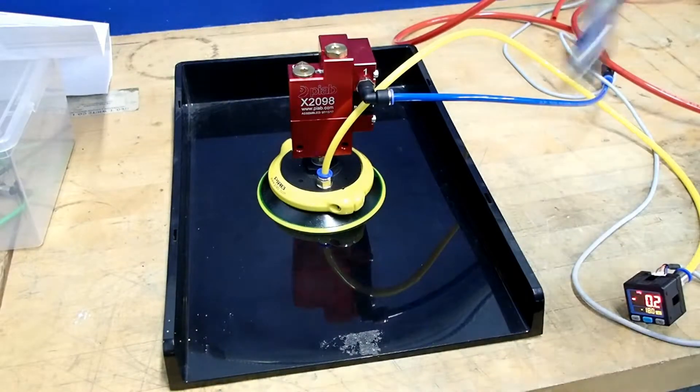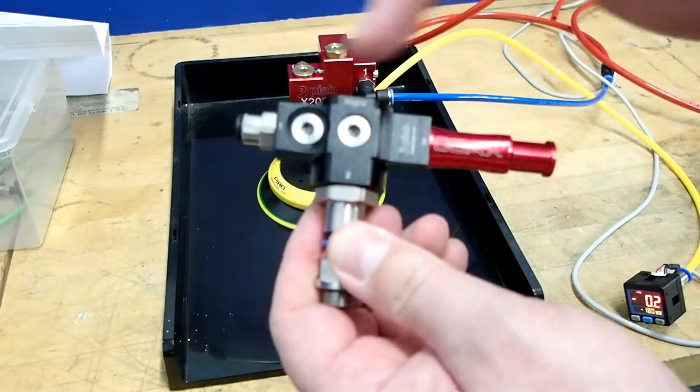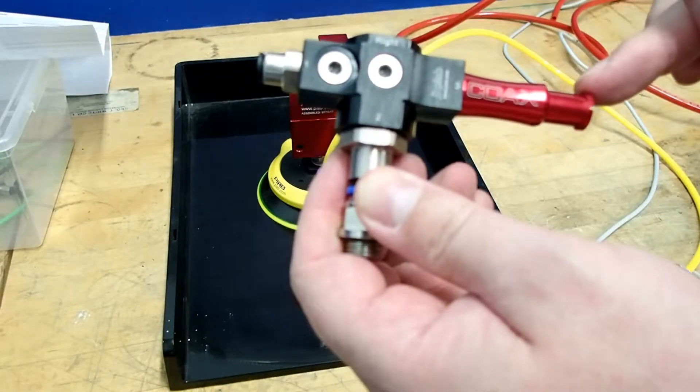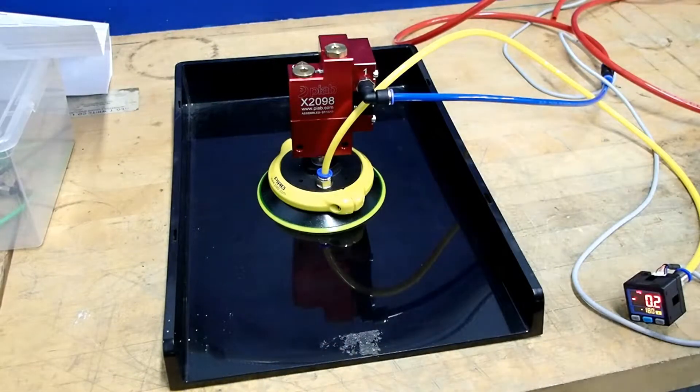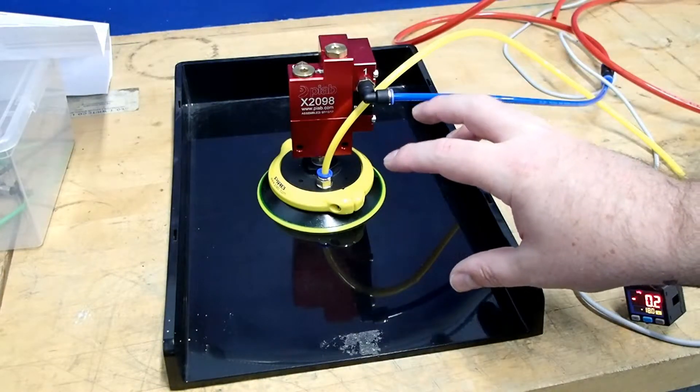Typically in a regular vacuum generator, the air has to continually pass through the cartridge in order to maintain vacuum. What the VacuStat allows us to do is turn off that air so we're using the least amount of air to get the maximum amount of hold.